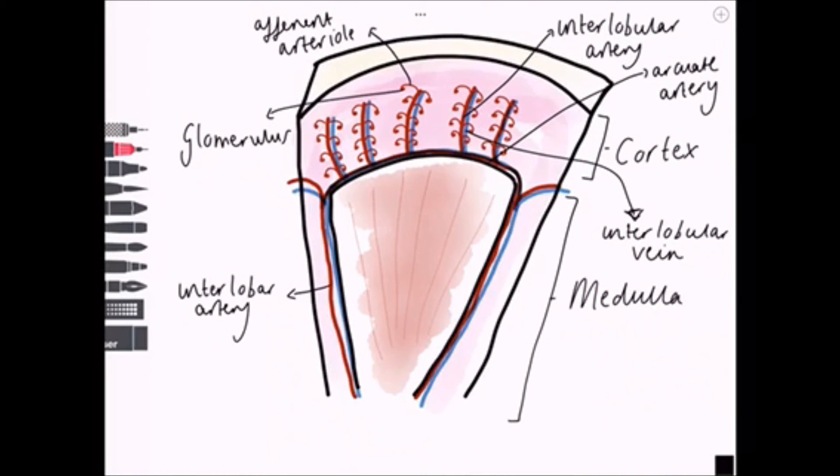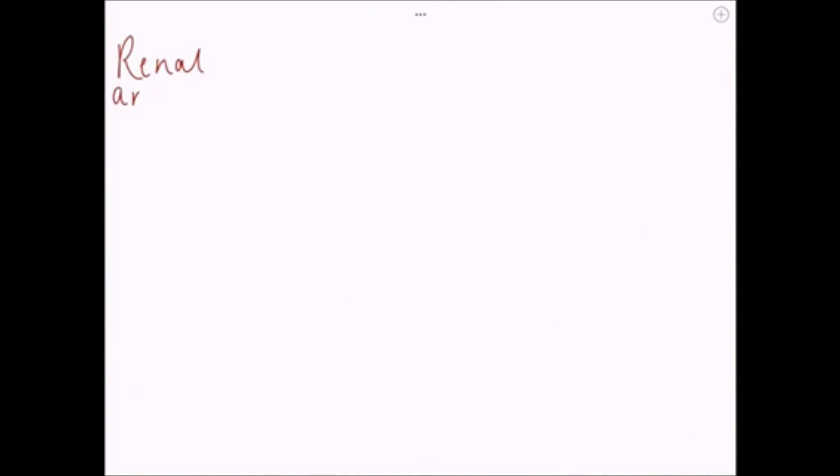From here, the interlobular vein drains to the arcuate vein, which then drains to the interlobar vein, which drains to the segmental veins, and then back to the renal vein.